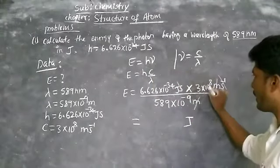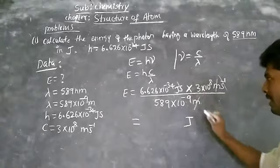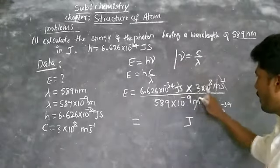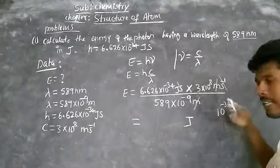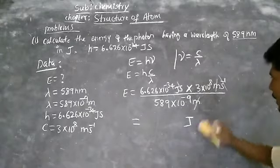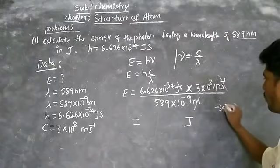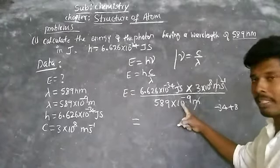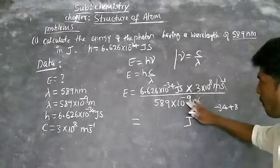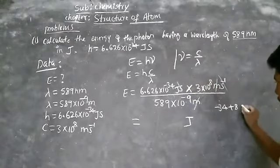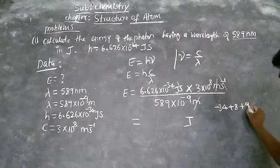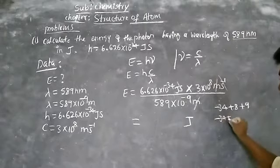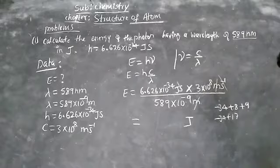In the powers: 10⁻³⁴ in numerator and 10⁸ in numerator, and 10⁻⁹ in denominator. Base is the same. For powers in denominator, minus 9 moves up. So we get minus 34 plus 8 plus 9, giving minus 34 plus 17 equals minus 17, combining all exponents.